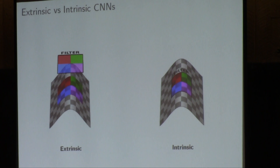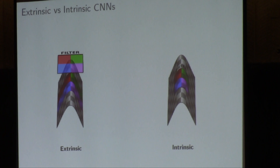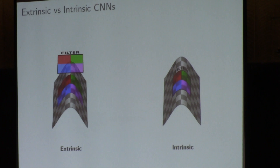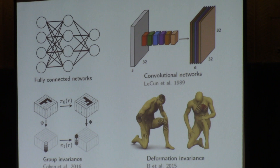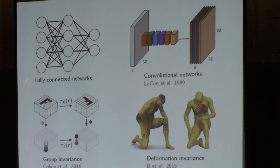What we want to do instead is design filters on the surface itself — we want them to be invariant to deformations. We want some intrinsic analogy of the convolutional operation. You can think of this as a natural evolution: when we have problem-specific invariance properties we want to preserve. One reason for the success of CNNs is that convolutional filters can be derived from shift invariance, with more recent generalizations to general group actions. Here we want to extend it to non-Euclidean domains, to manifolds — basically building deformation invariance into the architecture.